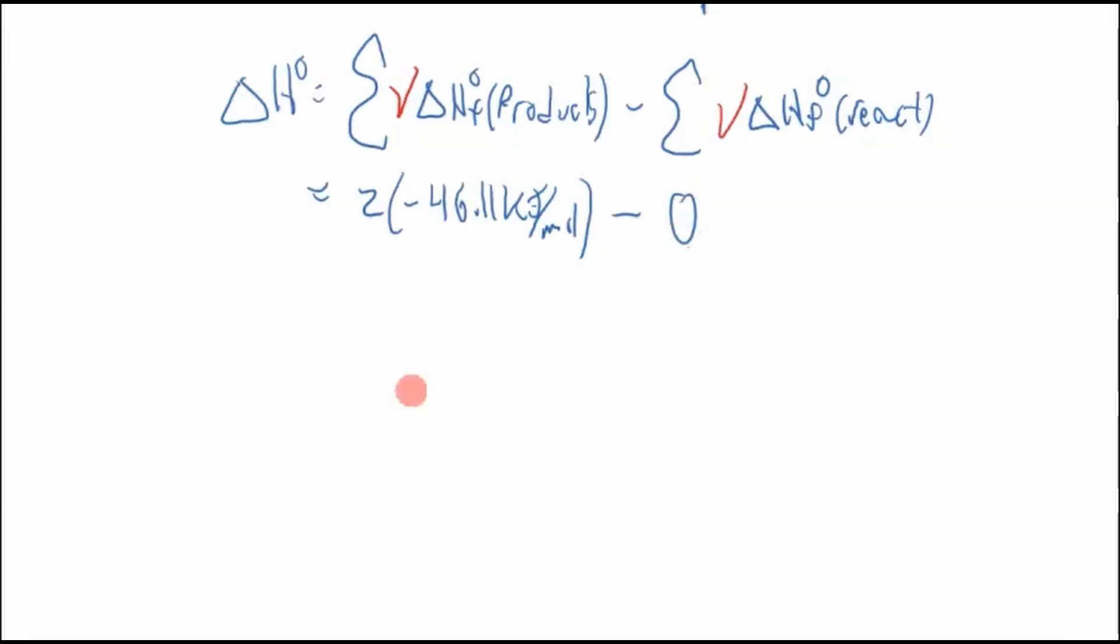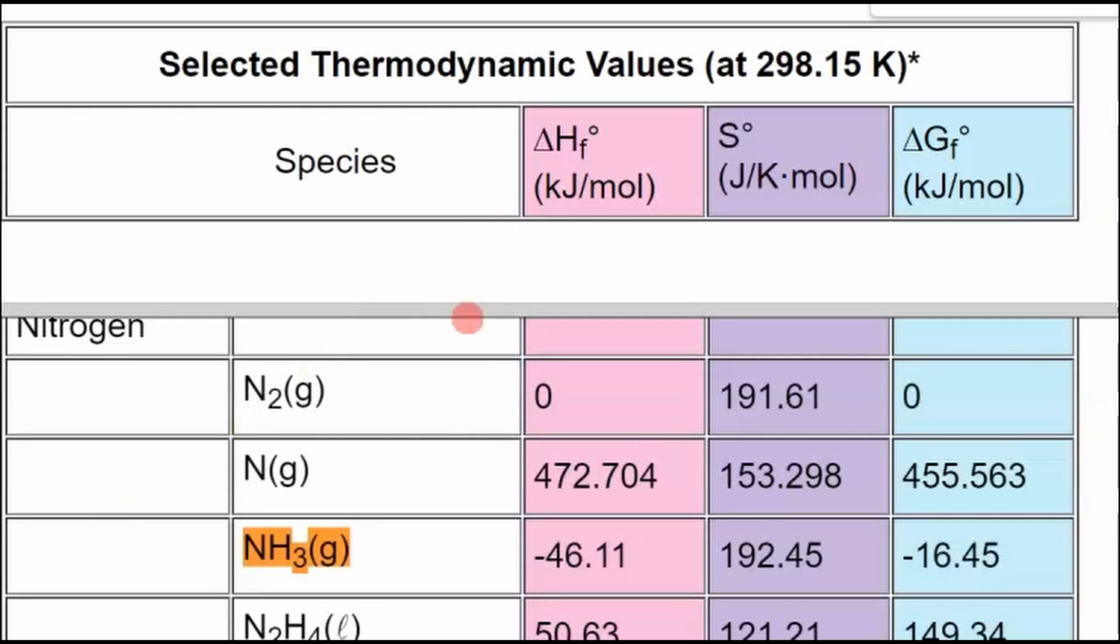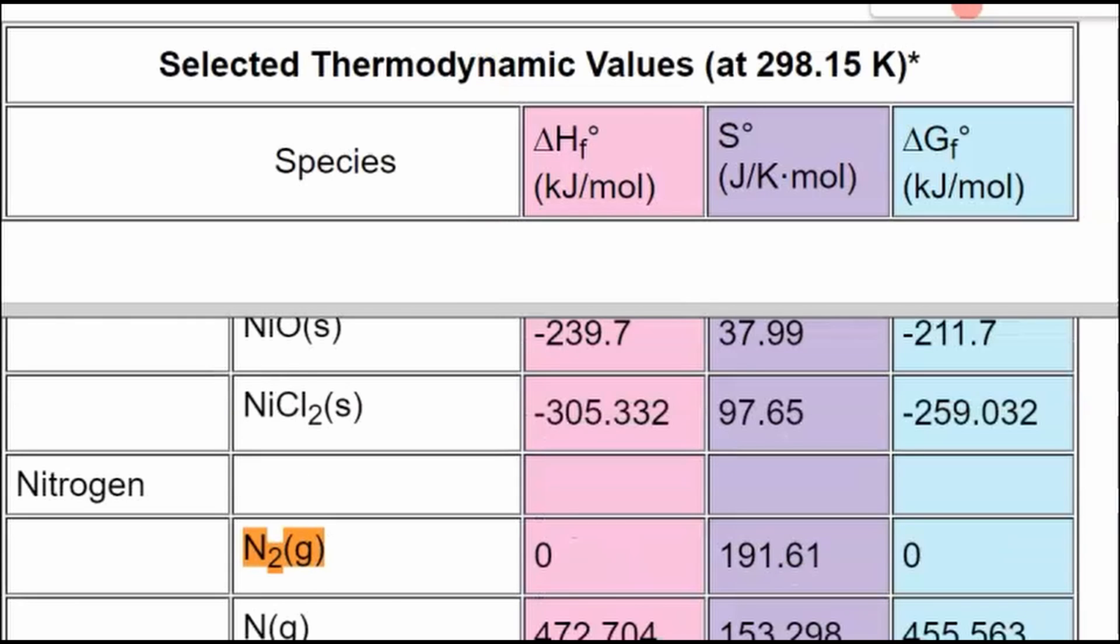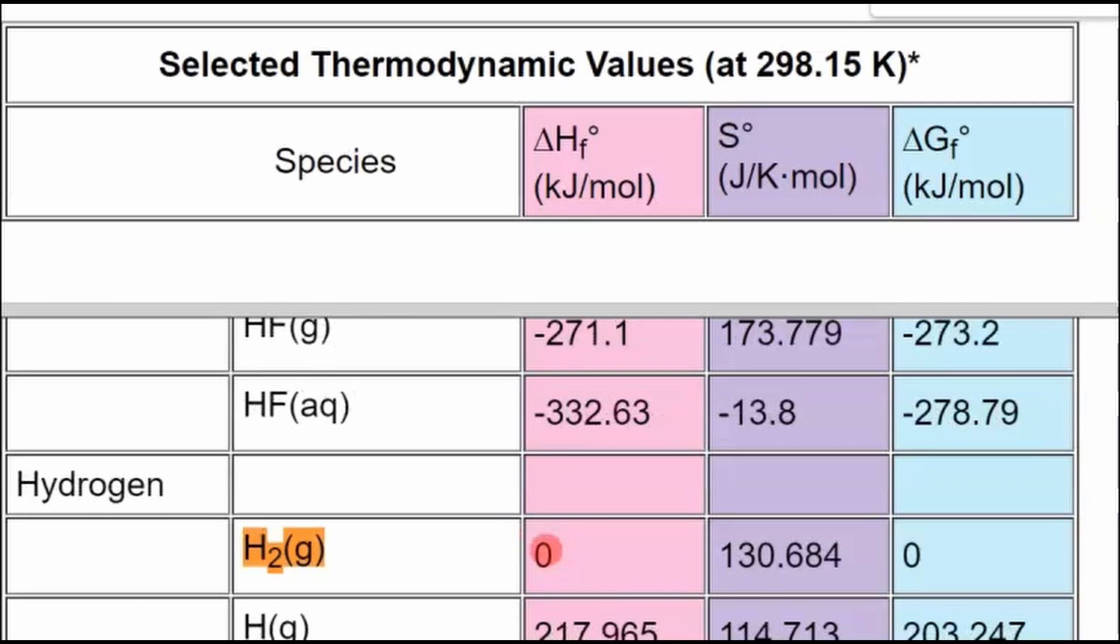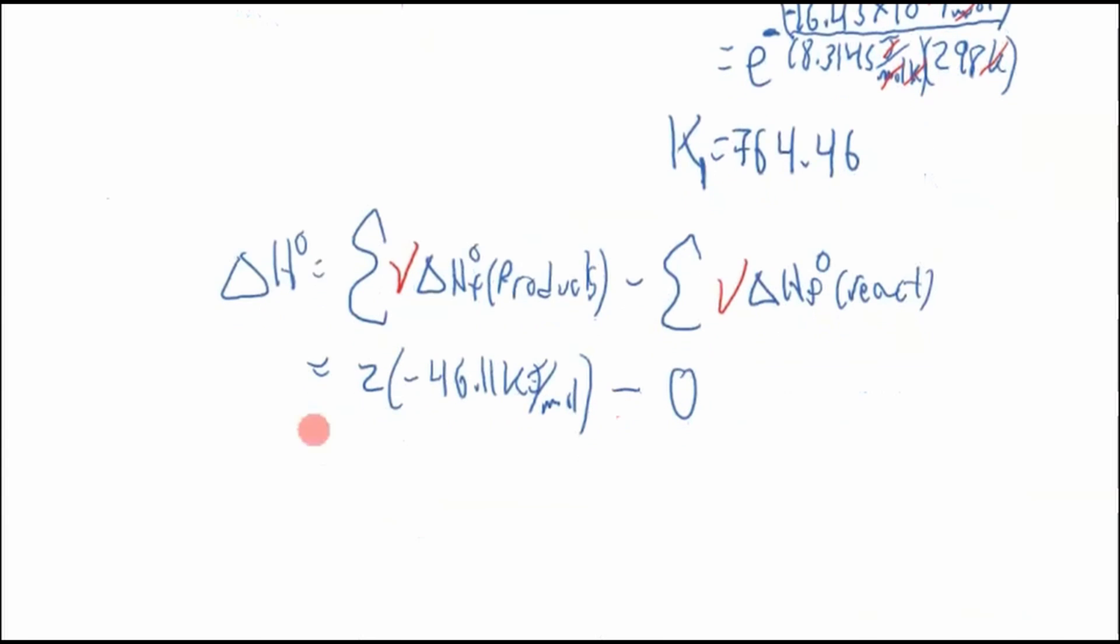Now, this is going to be zero because these are elements in their reference state, and if we look at our thermodynamic values, if we go to N2 gas, that's zero, and same thing with H2 gas, that's zero as well. So the reactants have zero enthalpy of formation, so that's nice. So then this answer is just negative, so 92.22 kilojoules per mole, and that's all we need.